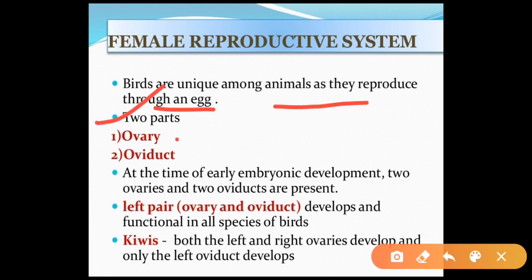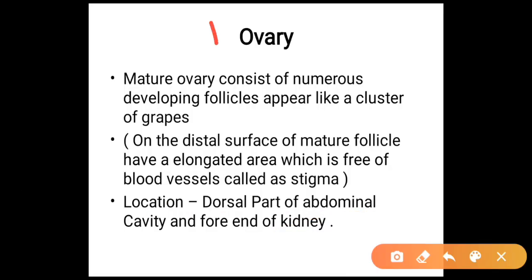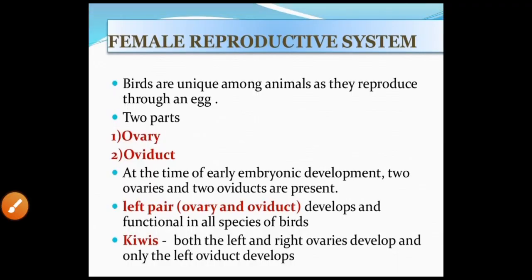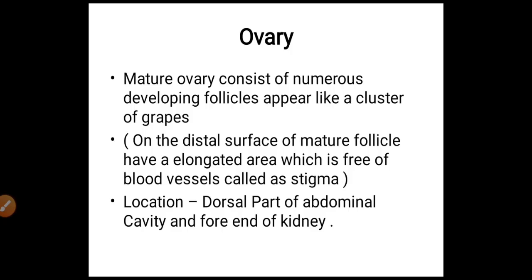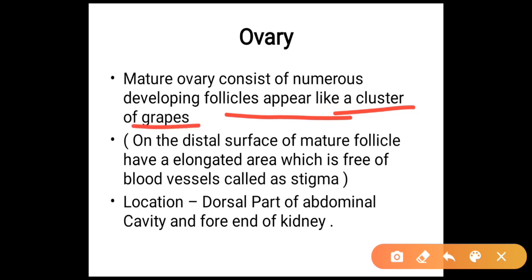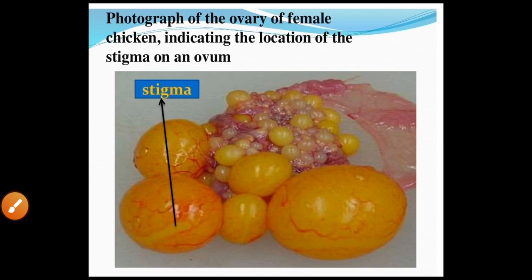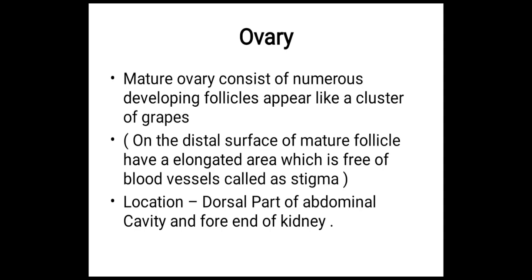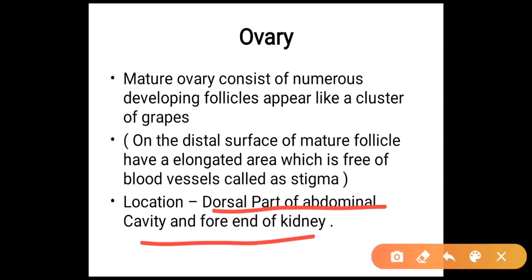There are two parts in the female reproductive system: the ovary and the oviduct. At the time of early embryonic development, two ovaries and two oviducts are present, but only the left ovary and oviduct develop and are functional in all species of birds. However, there is a congenital defect in which both left and right ovaries develop but only the left oviduct is developed. The mature ovary consists of numerous developing follicles appearing like a cluster of grapes. The distal surface of mature follicles has an elongated area free of blood vessels called the stigma. The ovaries are located in the dorsal part of the abdominal cavity, at the fore end of the kidney.